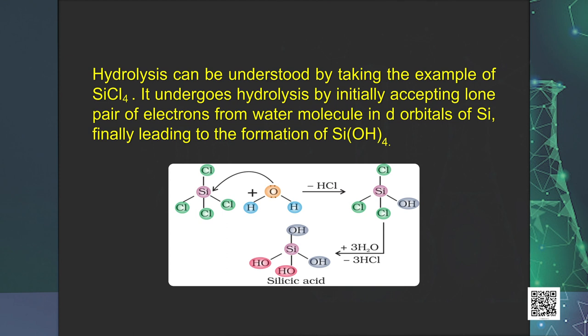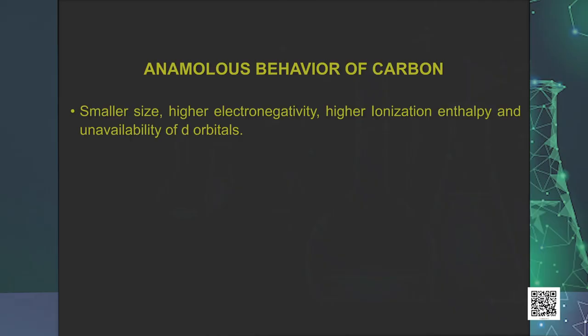Hydrolysis can be understood by taking the example of tetrachlorosilicon (SiCl4). It undergoes hydrolysis by initially accepting lone pairs of electrons from water molecules in the d orbitals of silicon, finally leading to the formation of tetrahydroxysilicon, Si(OH)4. Like the first member of other groups, carbon also differs from the rest of the members of its group. It is due to its smaller size, higher electronegativity, higher ionization enthalpy, and unavailability of d orbitals. In carbon, only s and p orbitals are available for bonding, and therefore it can accommodate only four pairs of electrons around it, limiting the maximum covalence to four, whereas other members can expand their covalence due to the presence of d orbitals.